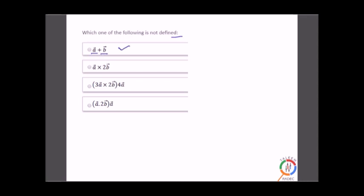Which of the following is not defined? Among the given options: addition of two vectors is valid; cross product of two vectors is valid; but a dot product of a vector with a cross product result that yields a scalar — when that scalar is then dot-multiplied with a vector in a disallowed way — is not defined. One option has a vector being multiplied with another vector in an undefined manner, so that operation is not defined.